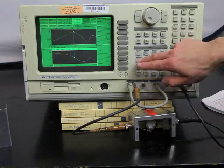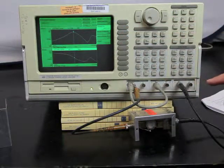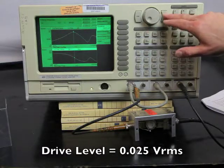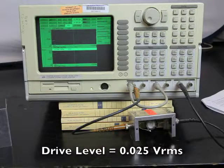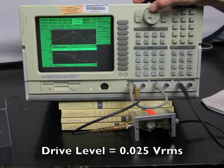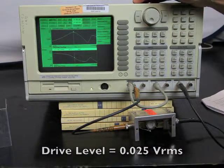Now let's try reducing the source amplitude to 25 millivolts. As you can see, the plot looks pretty much the same. Our resonance is at 2.0746 kilohertz.